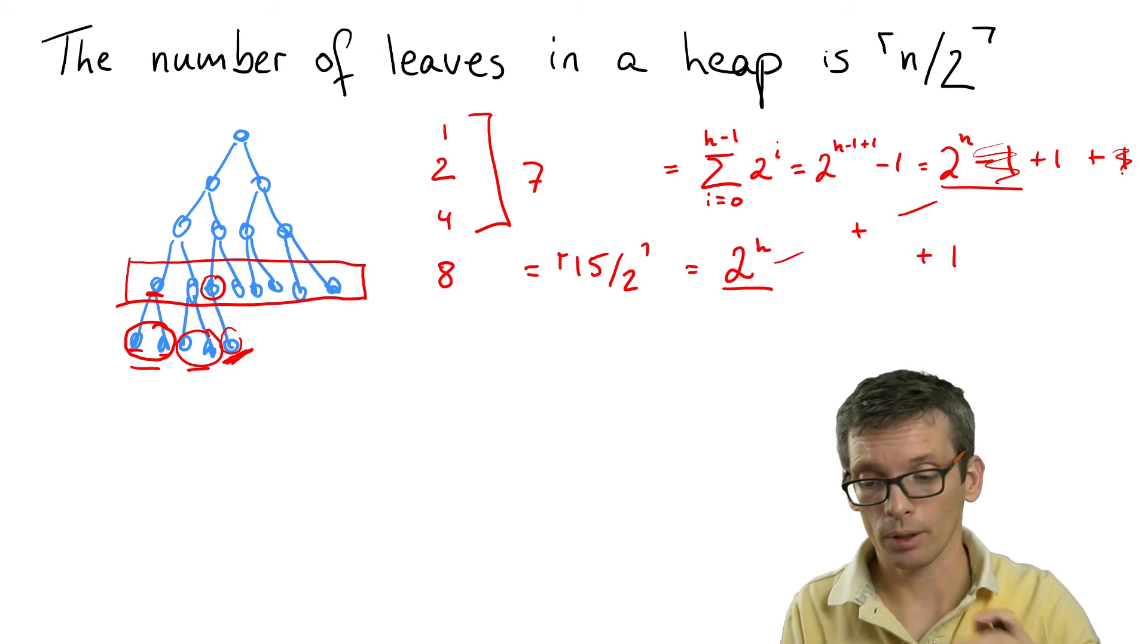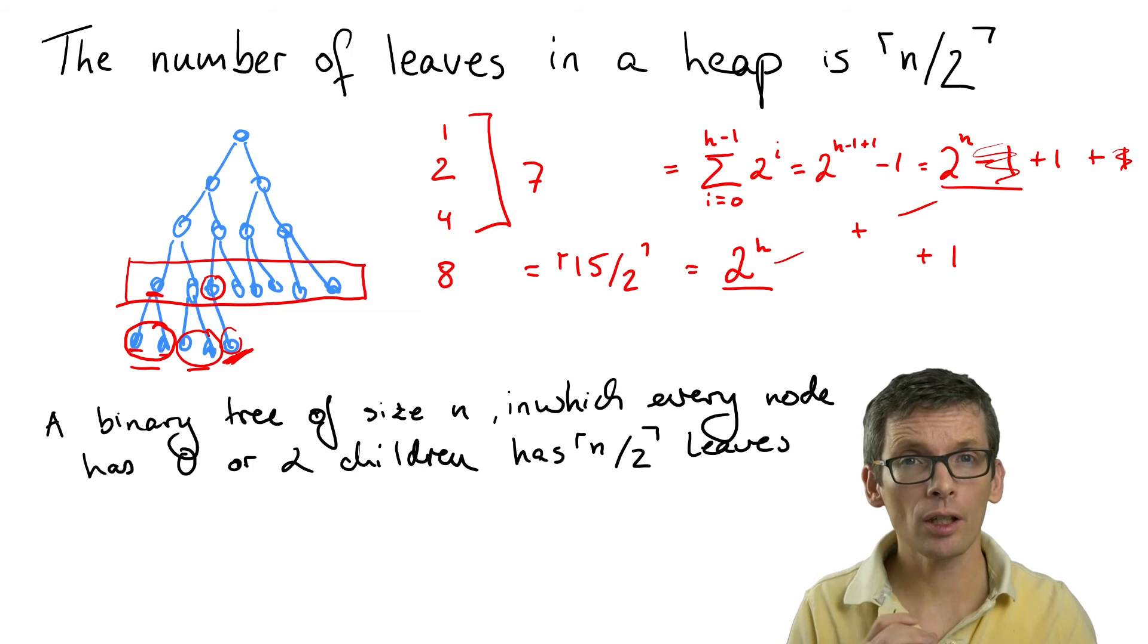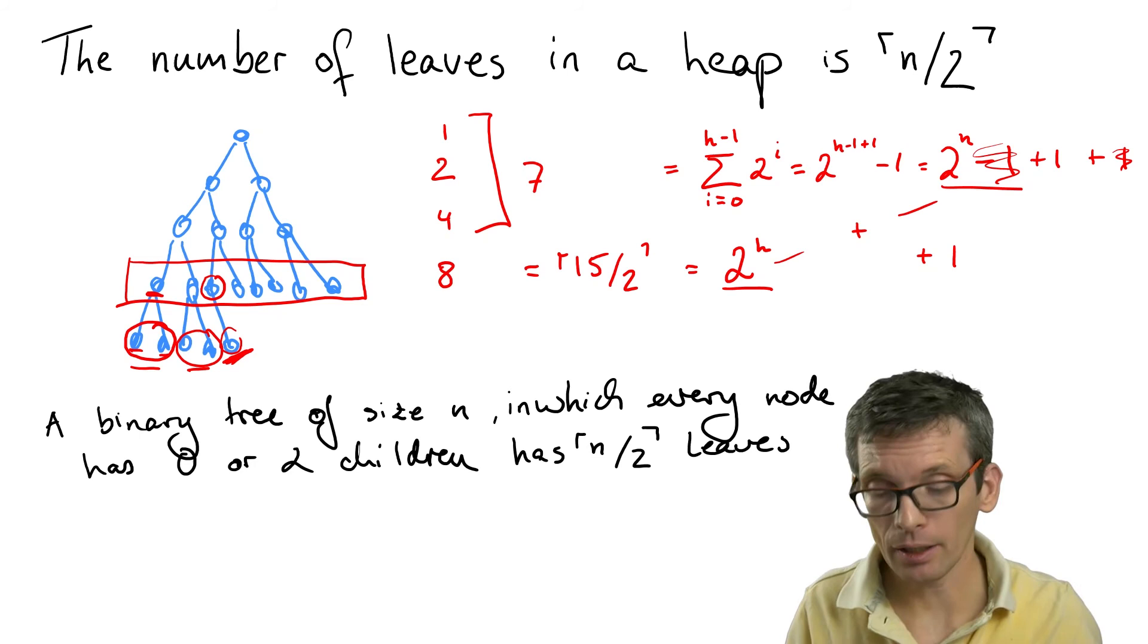binary tree where every node has either zero or two children. So this is already enough to get the property that half of the nodes are leaves. And why is that the case?